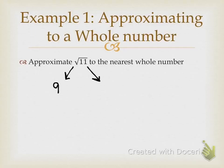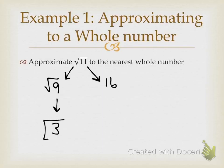What perfect square is just above 11? 16. So now I need to decide which one is it closest to — is it closest to 9 or 16? It's closest to 9. So what is the square root of 9? 3. So that's my answer. We're choosing the perfect square that it's closest to and taking the square root of that number.